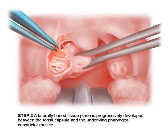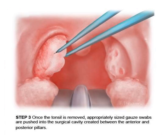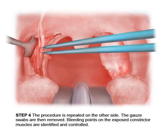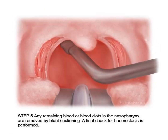When the dissection is done in the correct plane, there will be very minimal bleeding. If you enter the tonsillar tissue or deep to the muscles, bleeding will start. After the tonsil is removed, a gauze pack is put inside and pressurized, then slowly removed to check for any bleeding spots. Any bleeding area is cauterized. Suction is done from the oropharynx and nasopharynx, as with the head and neck extended, blood flows back into the nasopharynx.